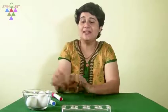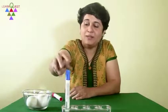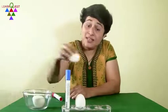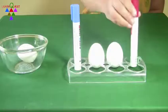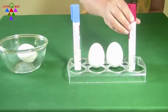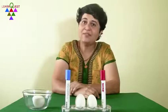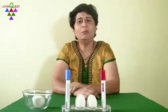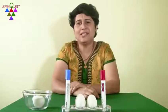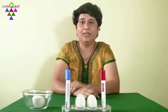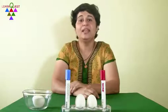Have you seen students write 101 as 1, 0, 0, 1 or 25 as 2, 0, 5? Children commonly make this mistake when they have not understood the concept of place value properly. In this video,